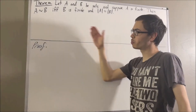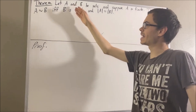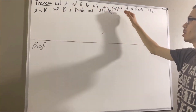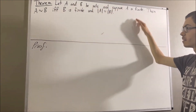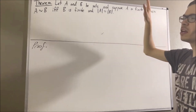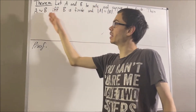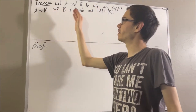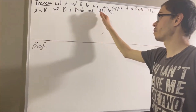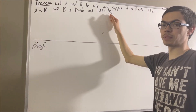In this video, we are going to prove the following theorem. Let A and B be sets, and suppose A is finite. Then there exists a bijection from A to B if and only if B is finite and the number of elements in A and the number of elements in B are equal.